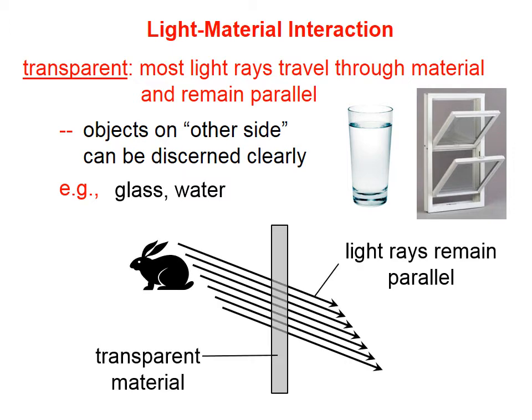Examples of transparent materials are things such as glass. Water is generally considered to be transparent.